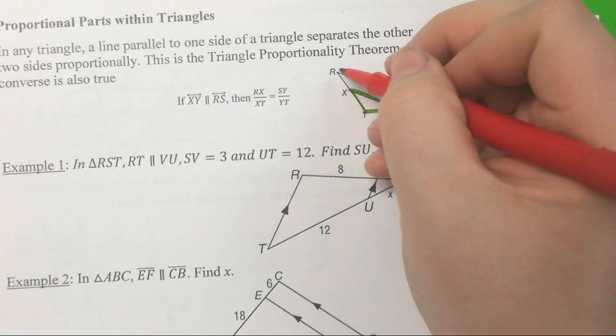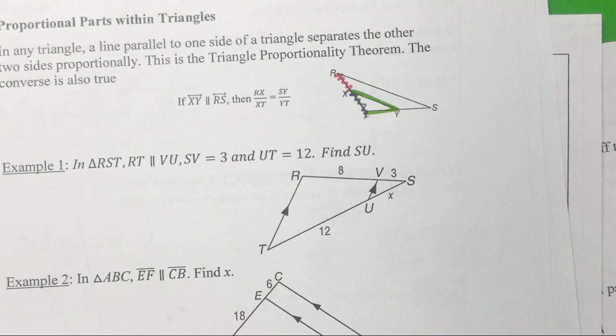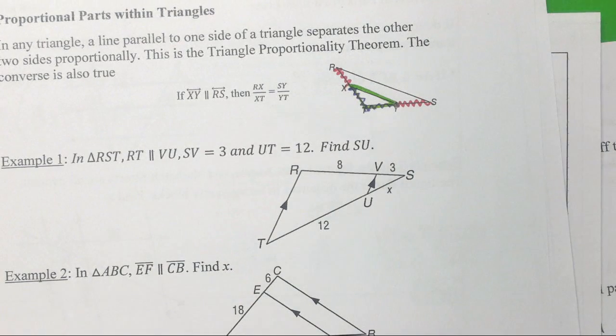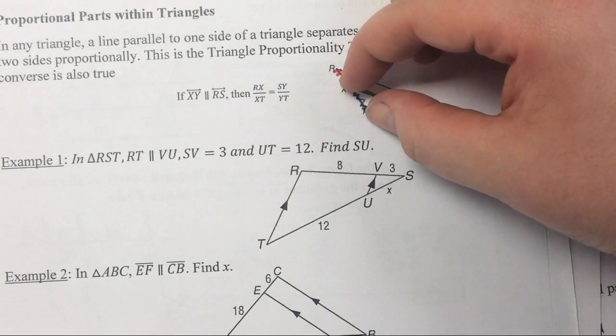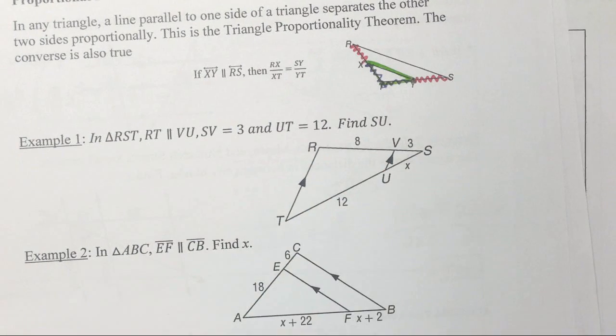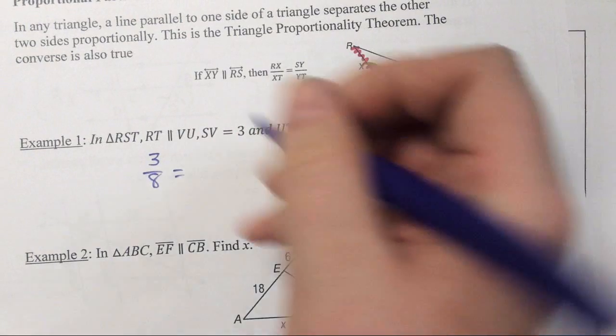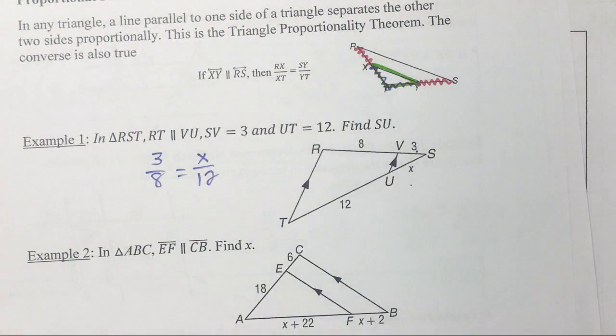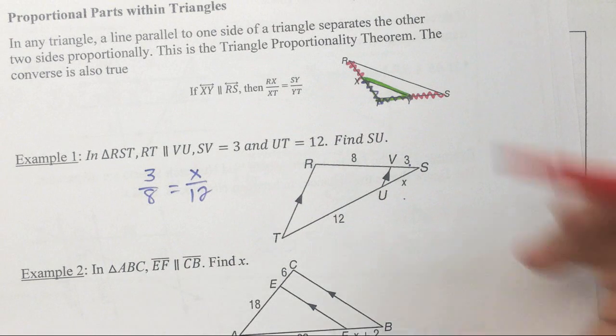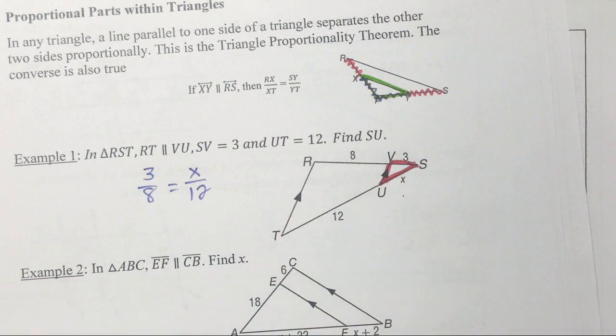First we've got to do something with triangles, and then we've got to do something with parallel lines. So triangles, I like to use my colors. I see this baby triangle living inside this giant triangle. So they say this piece, which is RX, over this piece, which is XT, is proportional to or equal to SY over YT.